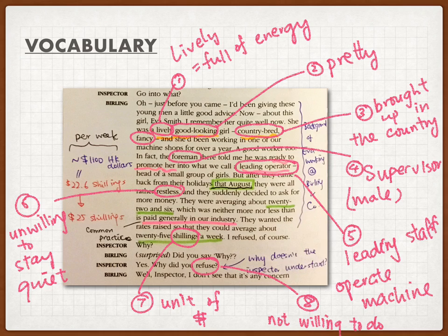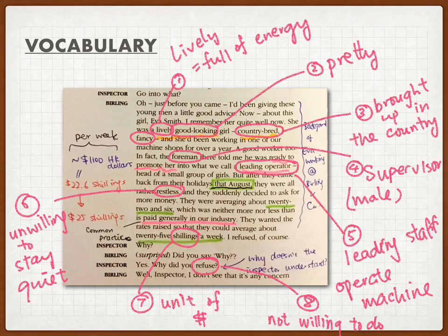There are more words in the second part of page 14. Mr. Burnley started explaining who Eva was and describing her. Number one, 'lively' — it means she was full of energy, a very energetic person. She was also good looking, meaning that she was pretty. And she was 'country bred,' meaning that she was brought up in the countryside, not from a city. Mr. Burnley even said that he fancied her — someone he actually liked.